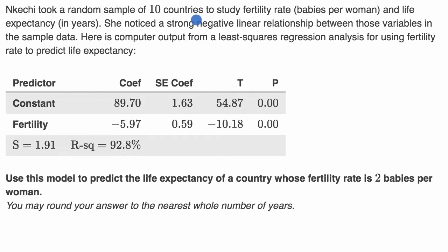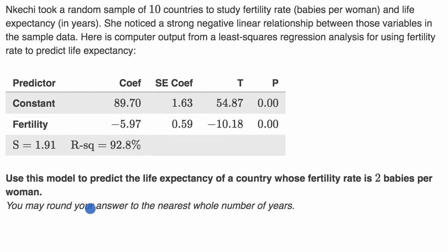Nakechi took a random sample of 10 countries to study fertility rate and life expectancy. She noticed a strong negative linear relationship between those variables in the sample data. Here is computer output from a least squares regression analysis for using fertility rate to predict life expectancy. Use this model to predict the life expectancy of a country whose fertility rate is two babies per woman, rounding your answer to the nearest whole number of years. Pause and see if you can do it — you might need a calculator.